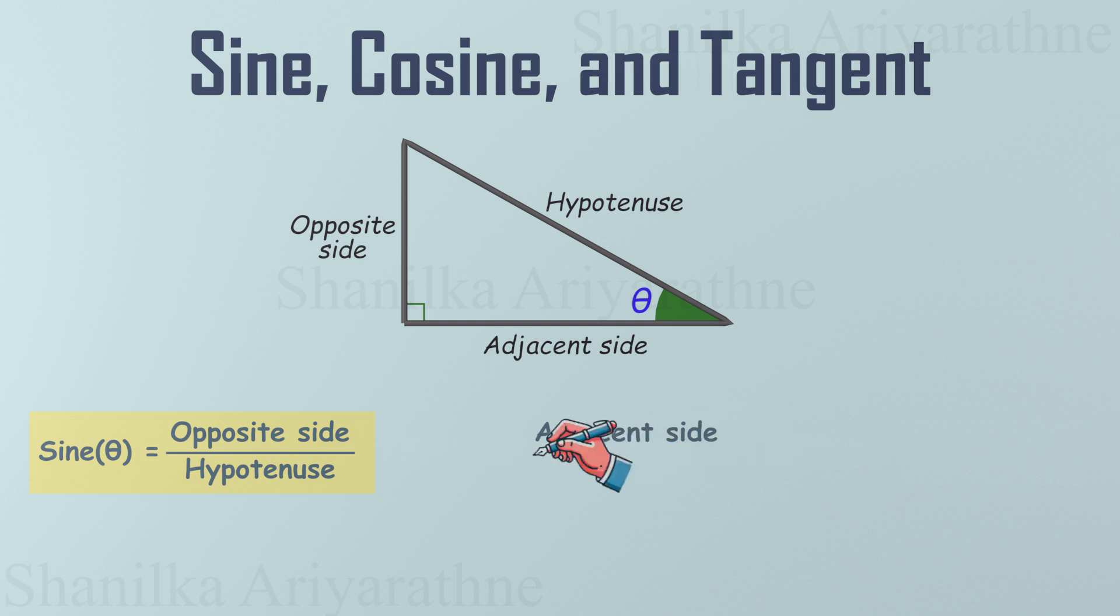The adjacent side divided by the hypotenuse is called the cosine of that angle. The opposite side divided by the adjacent side is called the tangent of that angle.